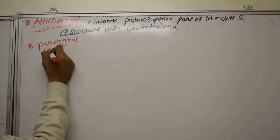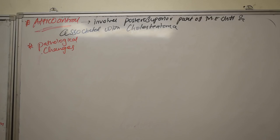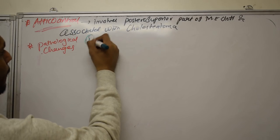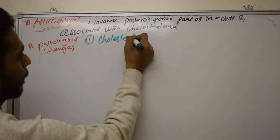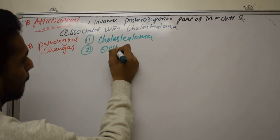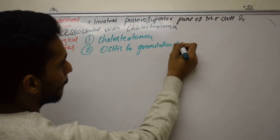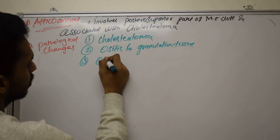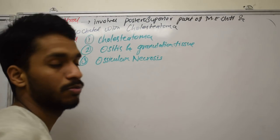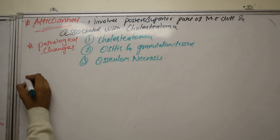The pathological changes seen in atticoantral type: the first and most common is cholesteatoma. Second, we will see osteitis and granulation of tissue. The third is ossicular necrosis, and the most commonly necrosed bone is the incus — specifically the long process of incus.